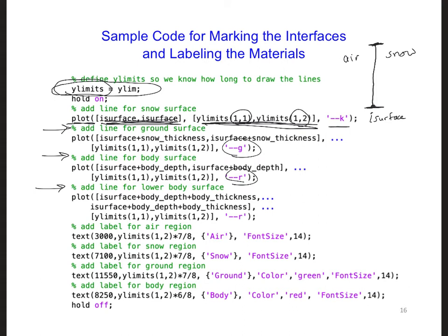And a line for the lower side of the body, which is also red. And then lastly, here are some adding some labels. Here is the i grid cell where I put the label. And here I had the y location of the label depend on what the limit of the plot was in the y direction.